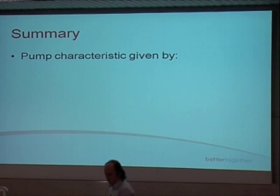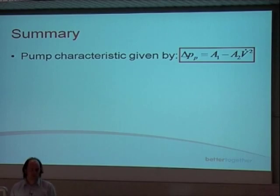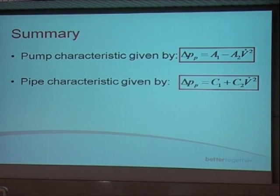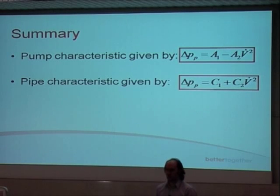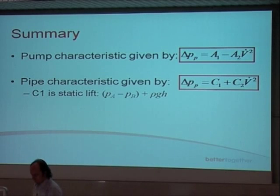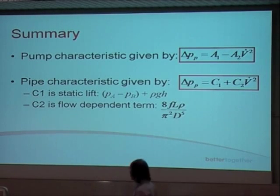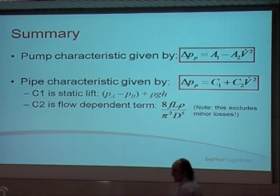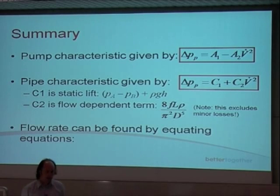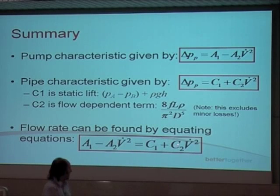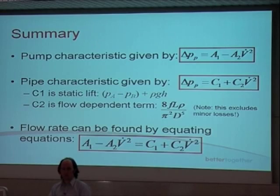In summary: the pump characteristic is given by A1 minus A2·V̇², with A1 and A2 dependent on the pump. The pipe characteristic is given by C1 plus C2·V̇², with C1 and C2 dependent on the pipe. The static lift C1 is generally the pressure difference between reservoirs plus the height difference. C2 is the flow-dependent term, and this is the case with no minor losses. The flow rate is determined by equating the two equations — one equation, one unknown V̇ — so you solve for V̇ to get the operating point. If given an efficiency equation, you can then plug that flow rate in to get efficiency.